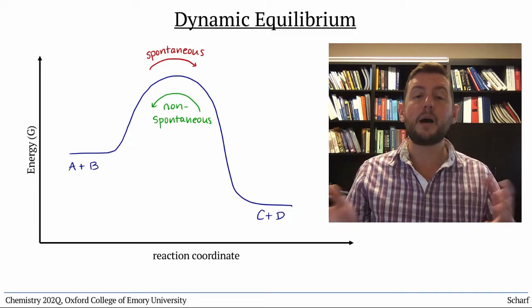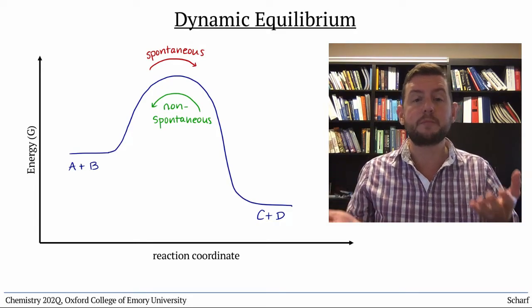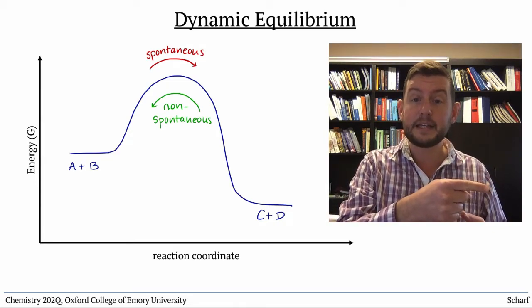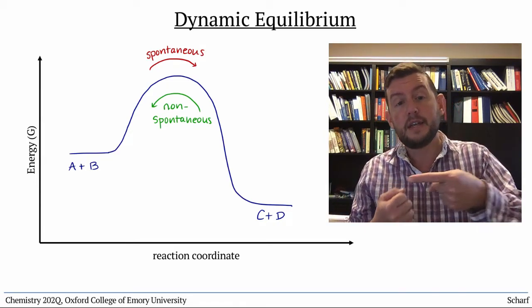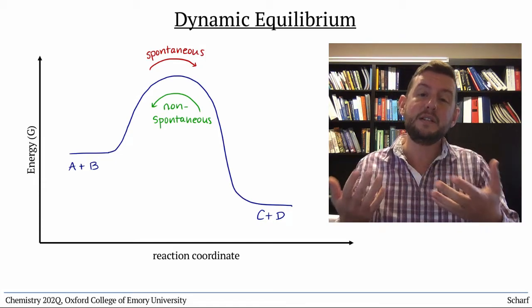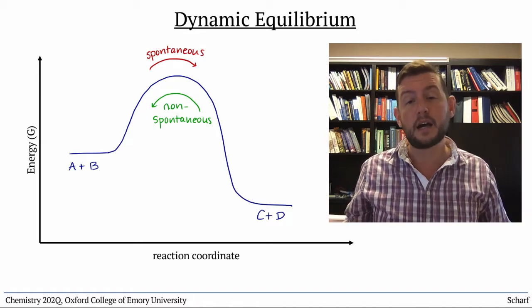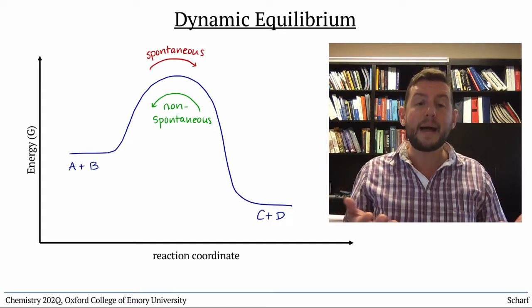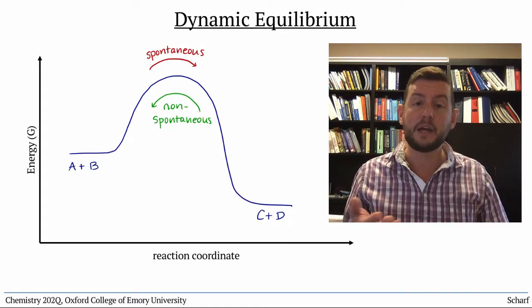This establishes a balance between spontaneous reactions being favorable and likely, and the reverse non-spontaneous reactions being relatively unfavorable and not as likely, but still possible. This balance is called dynamic equilibrium.